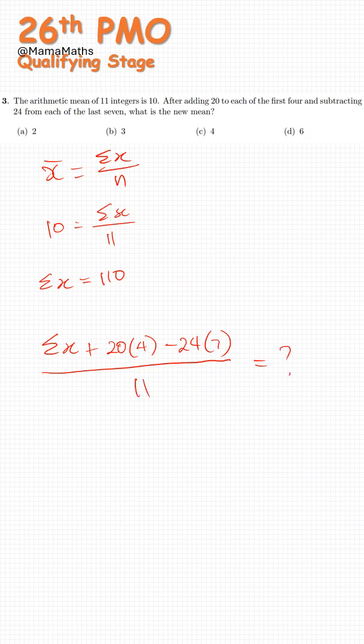So since we know this one, that's 110. 20 times 4, that's 80. 24 times 7, that would be 168. Divided by 11.